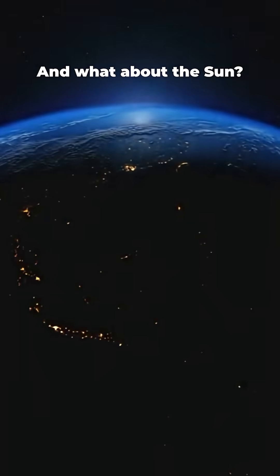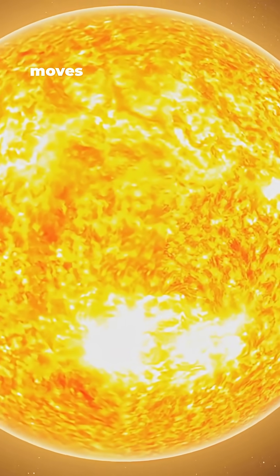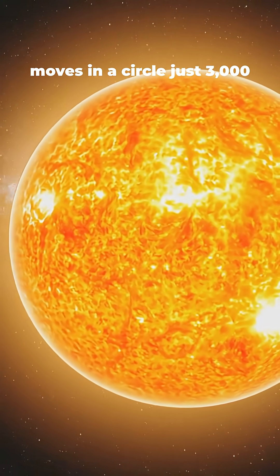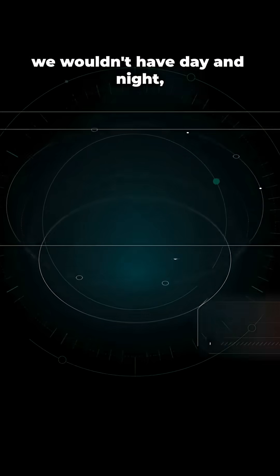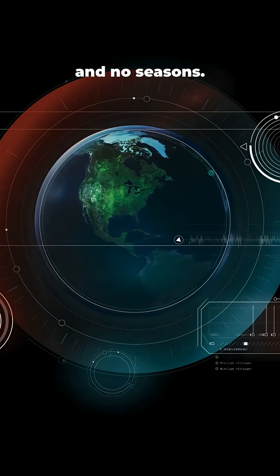And what about the sun? Flat Earth believers claim it moves in a circle just 3,000 kilometers above us. If that were true, we wouldn't have day and night, no time zones, and no seasons.